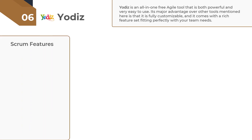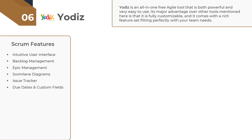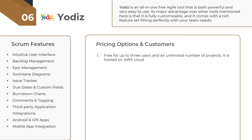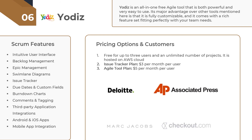Now let's talk about the features. Yodiz will help you to properly manage the epics, releases, backlogs, and sprints related to your product or project. The software also lets you track your releases and manage all of the sprints accordingly. Yodiz is relatively inexpensive. It is free for up to 3 users and an unlimited number of projects. Yodiz also has 1,000 plus customers including Associated Press, Checkout.com, Shell, and others.